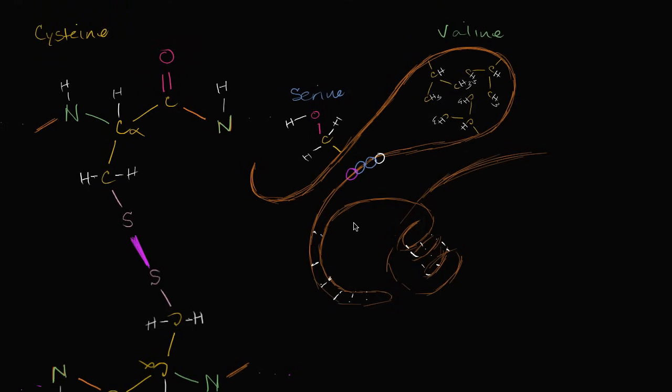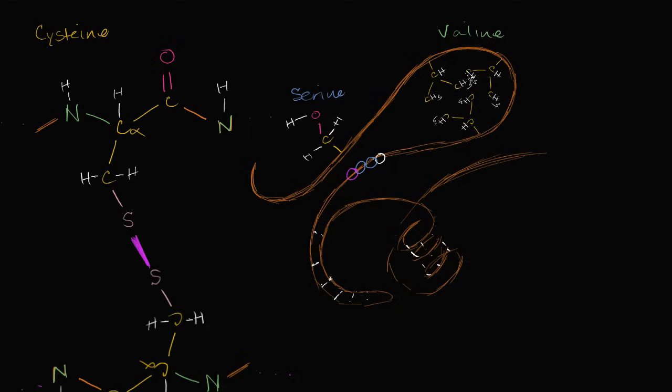So one example of tertiary structure, here I've drawn a bunch of side chains. This is from valine. I haven't drawn the backbone. The backbone's up here. And obviously none of this is drawn quite to scale. But the valine side chain, its R group, is pure hydrocarbon, which is hydrophobic.